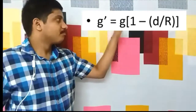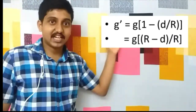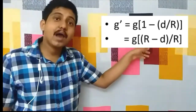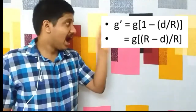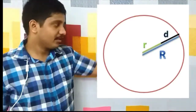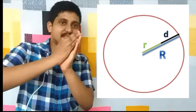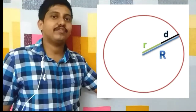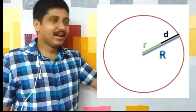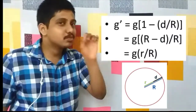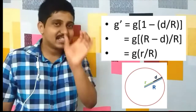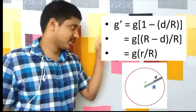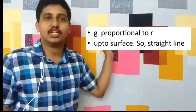If we rearrange this equation — g' = g × (1 − D/R) — we can write it as g' = g × (R − D) / R. Now, R − D is nothing but the distance from the center of the earth. So we can rearrange it as g' = g × r / R, where small r is the distance from the center. Therefore, g' is proportional to r.